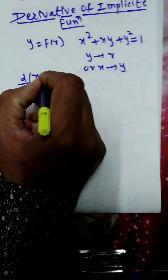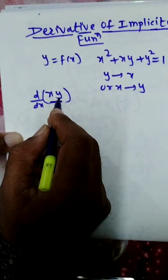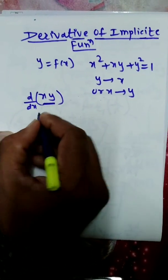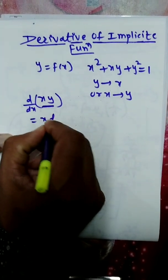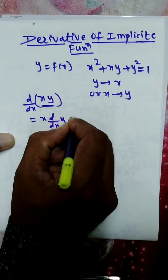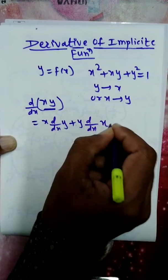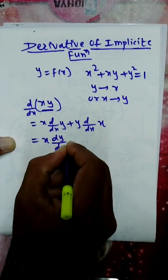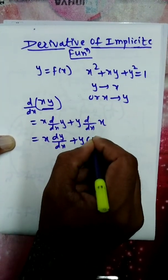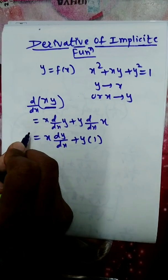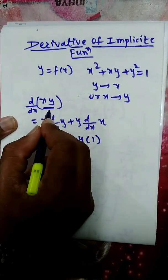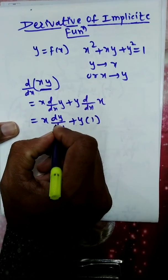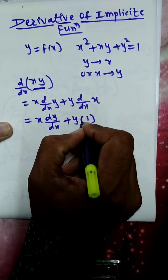We define y as a function of x. For the product rule, we apply: first as it is, times the derivative of the second, plus second as it is, times the derivative of the first. For x into y: x into dy/dx plus y into the derivative of x, which is 1.